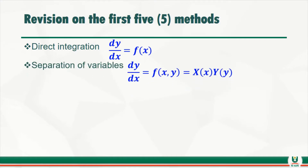The second method is separation of variables. What is special about this one is that we have the problem dy equals f(x, y), but the condition is that we must be able to easily separate the variable f(x, y). In this case, f(x, y) will give us a function of x times a function of y — that is how we handle such a problem.